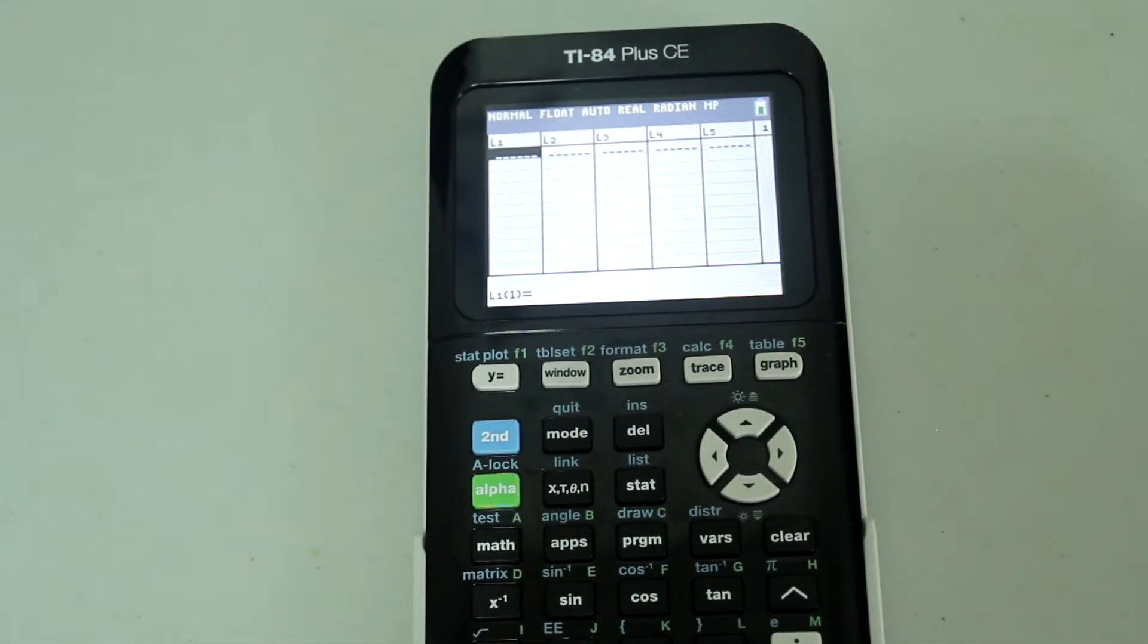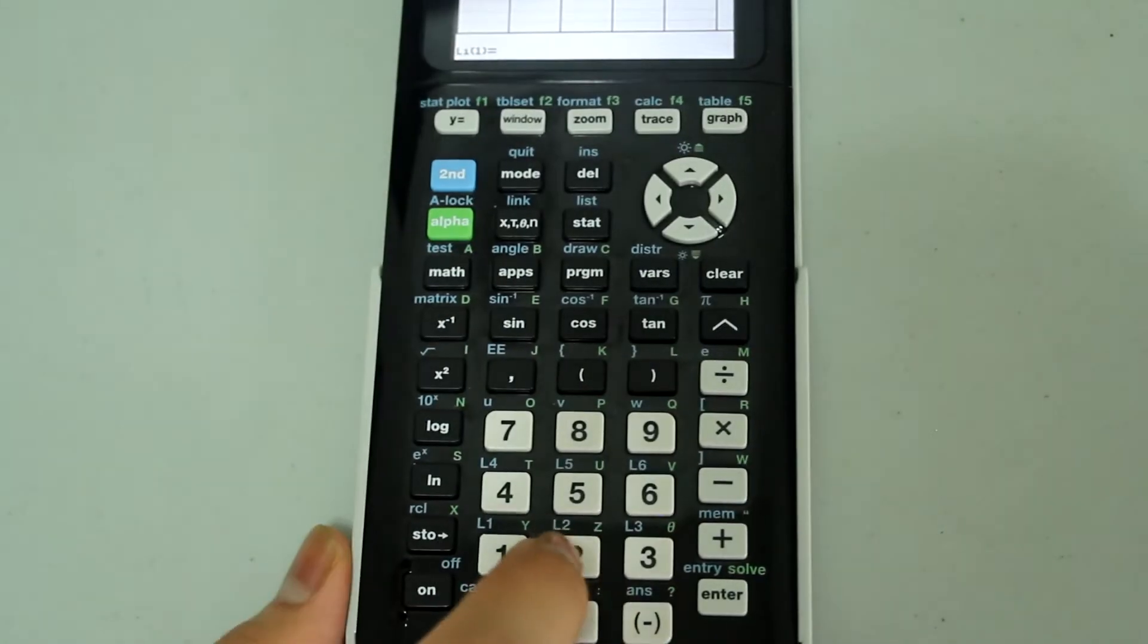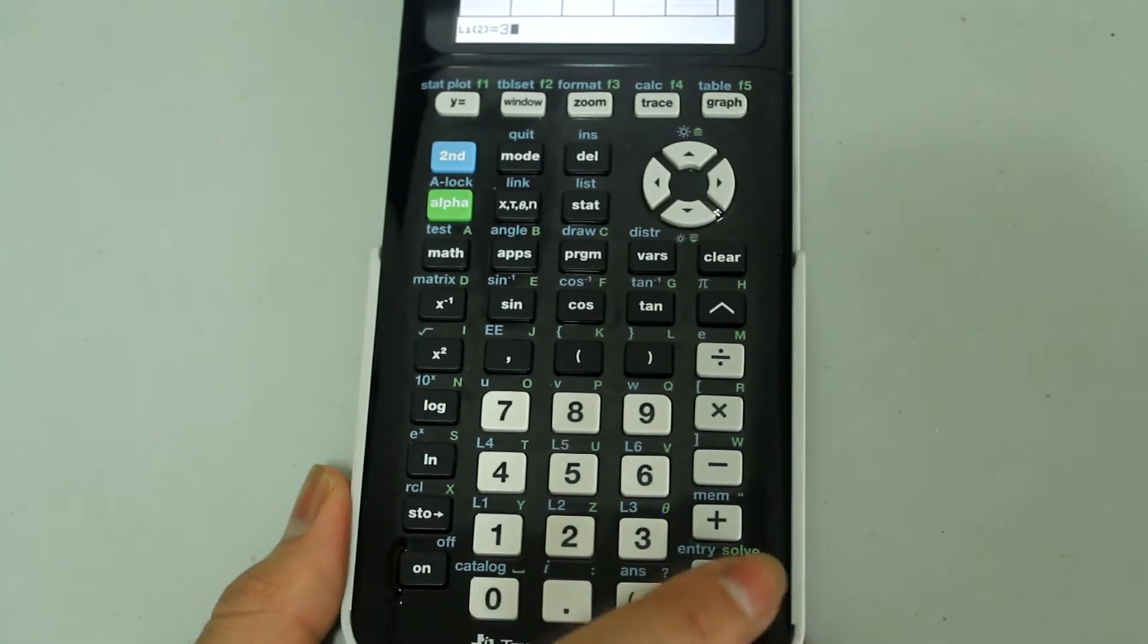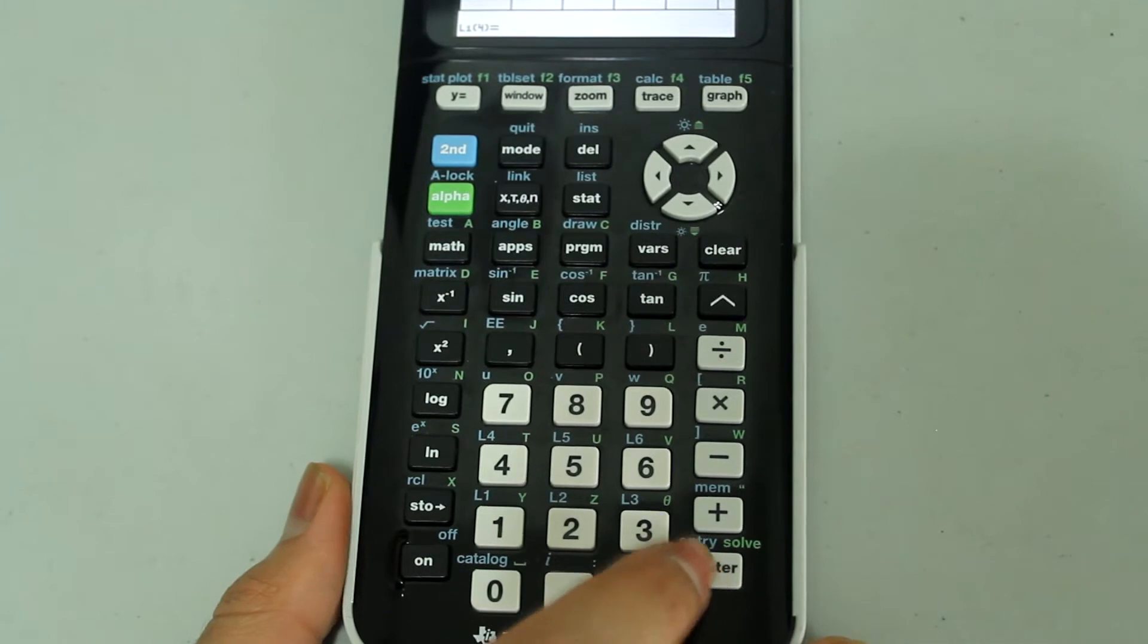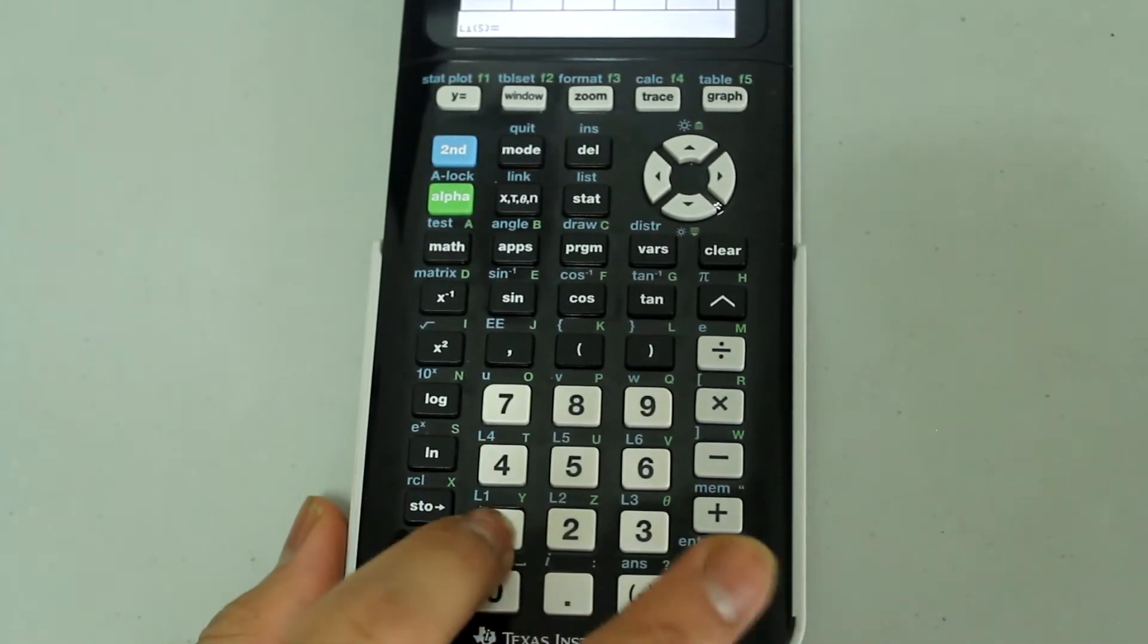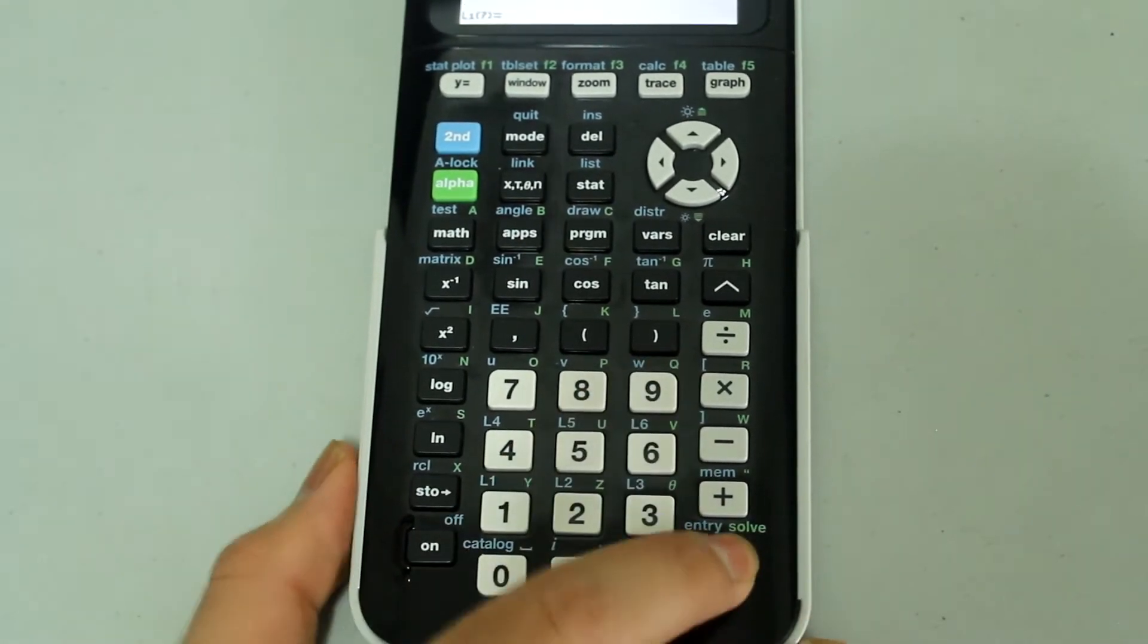Now I am going to type in the data set. First I'm going to type in 2 and press enter, 3 and press enter, 5 and press enter, 8 and press enter, 1 and enter, finally 9 and enter.